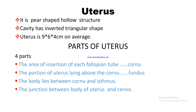The uterus is a pear-shaped organ, with a cavity that has an inverted triangular shape. Its average size is 9 × 6 × 4 cm. It consists of four parts: the cornua, which is the area of insertion of the fallopian tube; the fundus, which is the portion lying above the cornua; the body, which lies between the cornua and the isthmus; and the junction between the body of the uterus and the cervix.